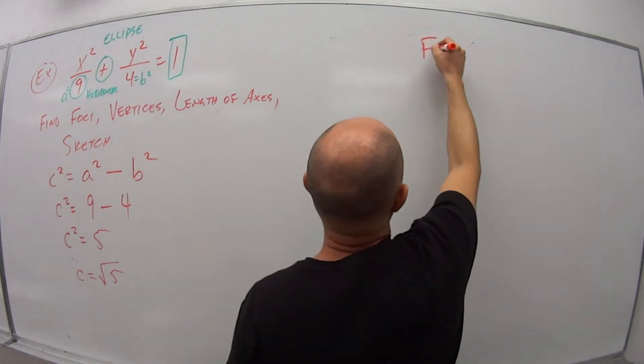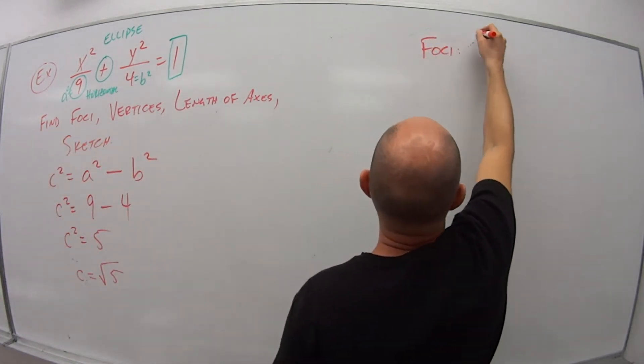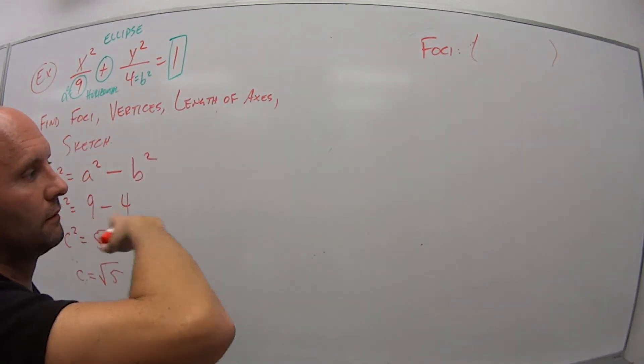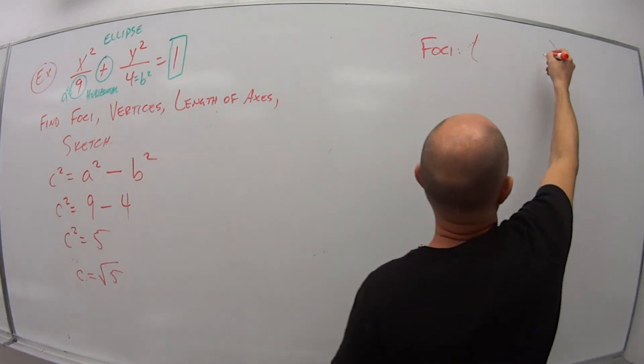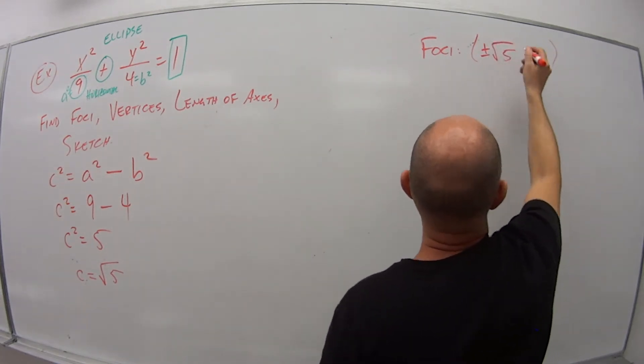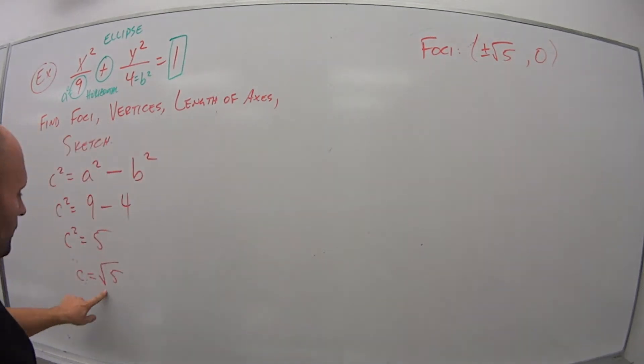So c squared is equal to 5. So c is the square root of 5. Therefore, the foci, because this is a horizontal ellipse, my y value isn't going up or down. So that's 0, and then here I have plus or minus whatever my value for c was, so plus or minus the square root of 5.